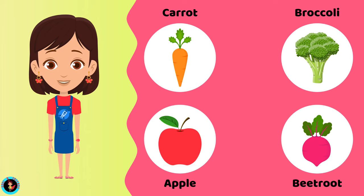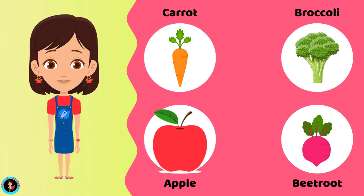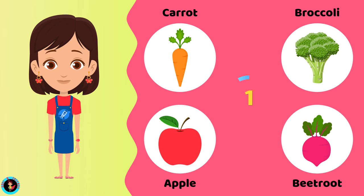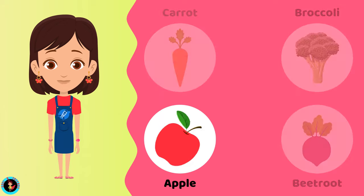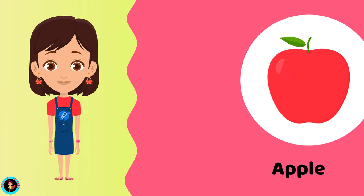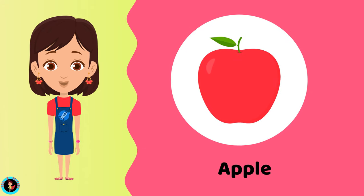Which among these is a fruit? Carrot. Broccoli. Apple. Beetroot. The right answer is Apple. Apple is a fruit.